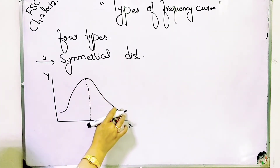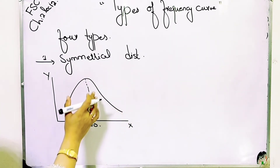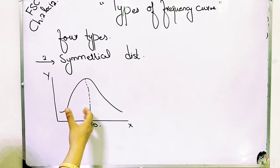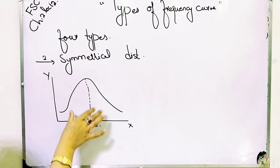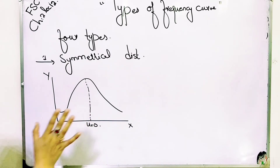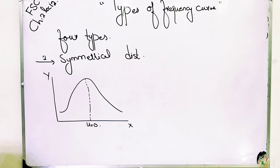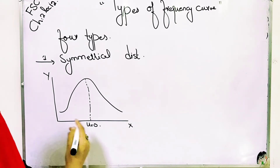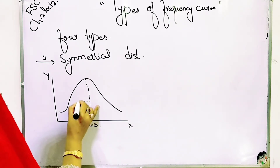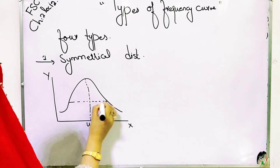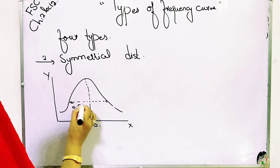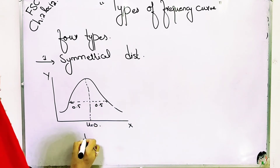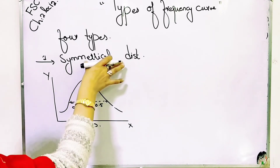We say the area under the curve is equal to one. A frequency distribution and curve is said to be symmetrical if the values equidistant from the central maximum have the same frequencies. The curve can be folded along the central maximum value such that the two halves of the curve are equal. Both sides are equal — 0.5 and 0.5 — and the area under the curve is equal to one.